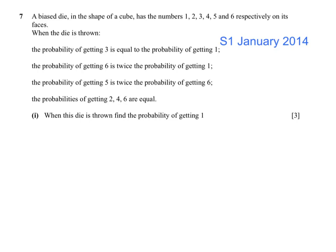S1, January 2014, question 7. We're rolling a dice, which means we can get a 1, a 2, a 3, a 4, a 5, and a 6.